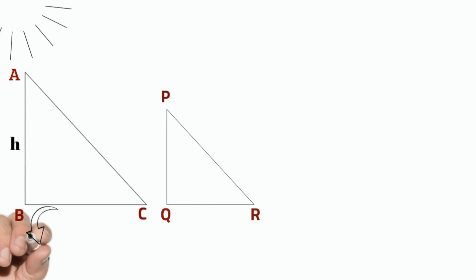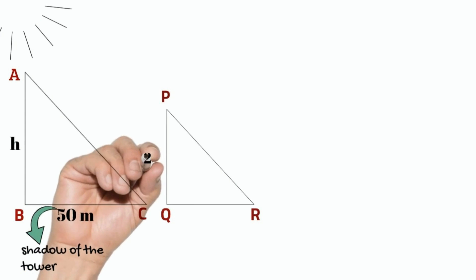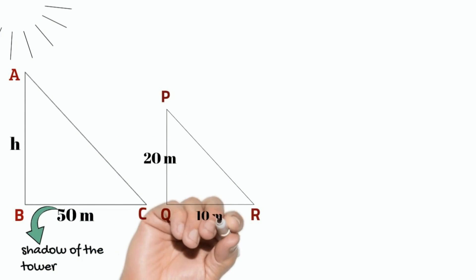AB represents height of the tower, BC is length of the shadow of tower. PQ is height of the house. QR is length of the shadow of house.